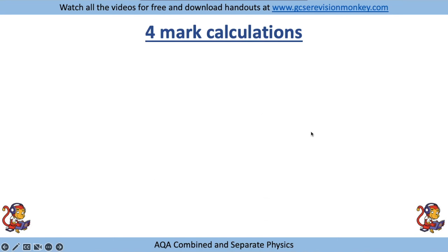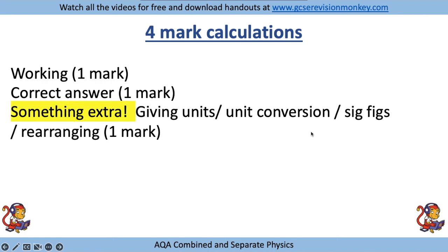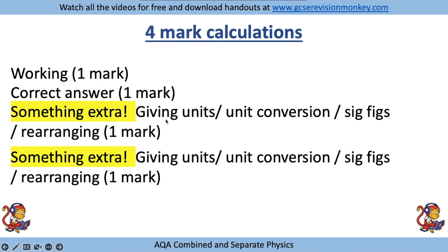For four-mark calculations, you get one mark for your working and one mark for the correct answer, and then a couple of the extra things to do - for example, giving the units and putting the answer in significant figures, or doing a unit conversion and rearranging. If it's a four-mark question, you're going to be looking for a couple of these things throughout the question.